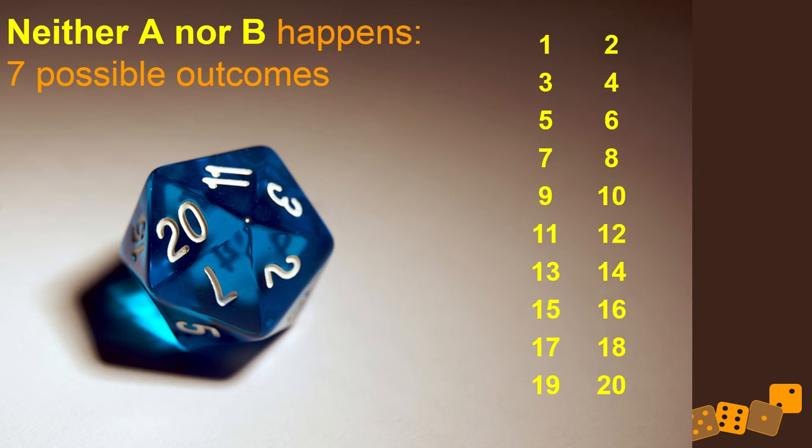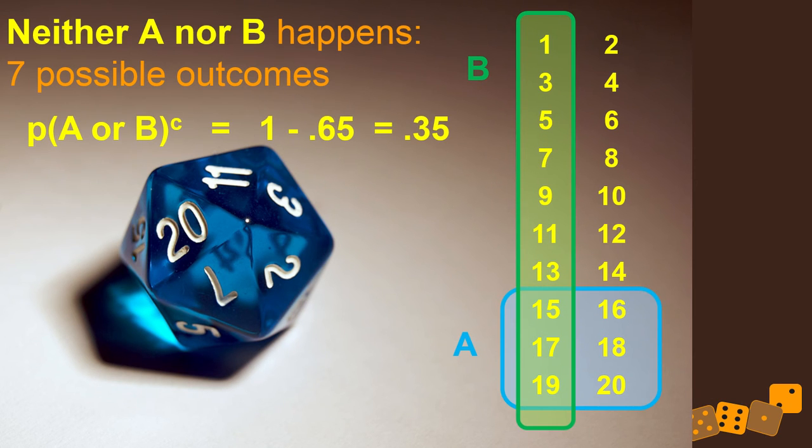So as a final note, what happens with neither A nor B? What's that probability? Well, it's pretty easy. There's A, there's B, and we've already figured out everything else. So if we know that A or B is 0.65, then neither A nor B has to be 1 minus that. So it's these things here. Seven out of 20 is 0.35. And figuring it out this way works too. One minus 0.65 is 0.35.